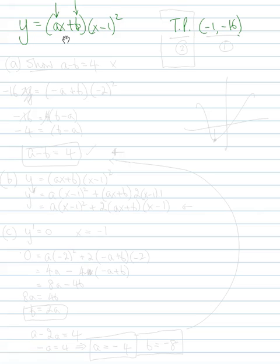We've got a point, which is minus 1, minus 16, and we're told that it's a turning point. So that's two bits of information, and we've got two unknowns, a and b, so in theory we should be able to solve this. Let's look at the three parts that we've been asked to do. First one is show that a take b equals 4. So I like questions that say show, because show means that they're kind of given us the answer, and we've just got to find our way to the answer.